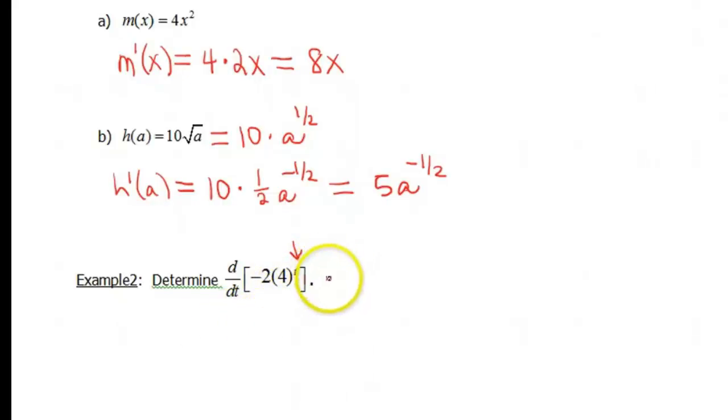So to do the derivative of this, we're gonna have to follow our exponential rule. Okay, so my negative 2 just comes along for the ride. And remember, 4 to the t again comes back at it. So 4 to the t, but then we have to multiply by the natural log of the base, which is 4.